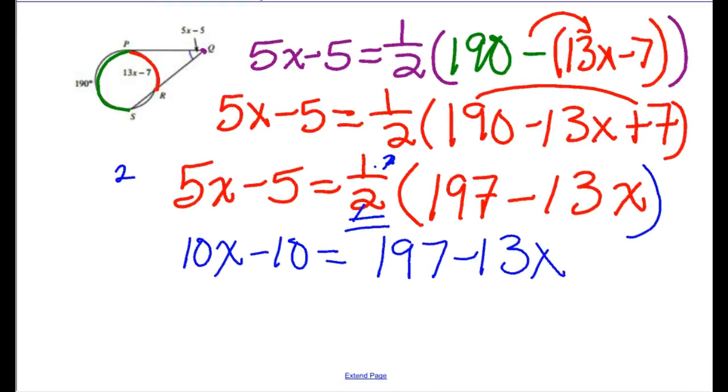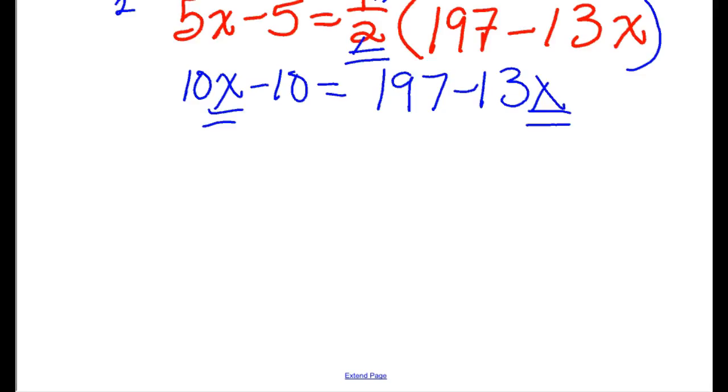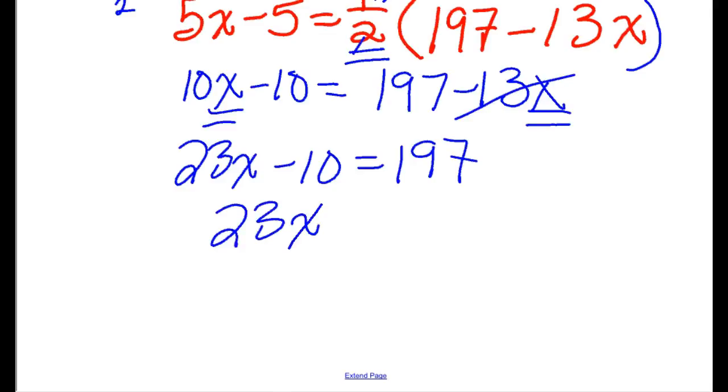I'm solving this for x, so we've got to consolidate them on one side of the equals. I'm going to add 13x to both sides giving me 23x's over here. I added them to both sides so wiped them out over here. I'm going to add 10 to both sides. I'm going to divide both sides by 23. 207 divided by 23 is equal to a beautiful 9. Isn't that pretty?